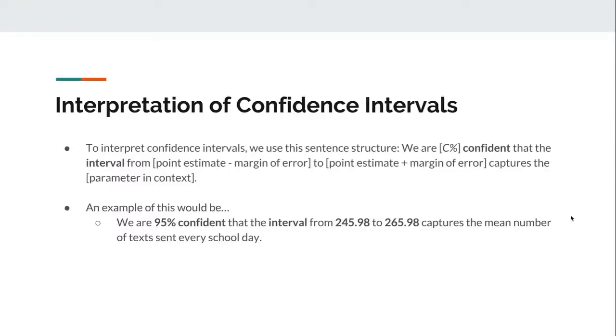To interpret confidence intervals, we use this sentence structure: we are blank percent confident that the interval from blank to blank captures the blank. An example of this would be: we are 95% confident that the interval from 245.98 to 265.98 captures the mean number of texts sent every school day.